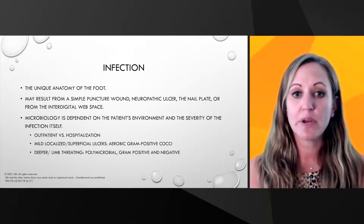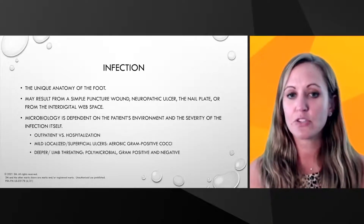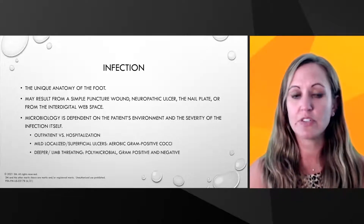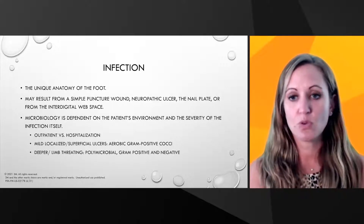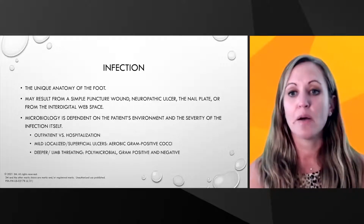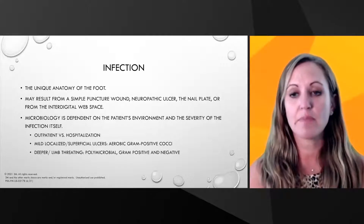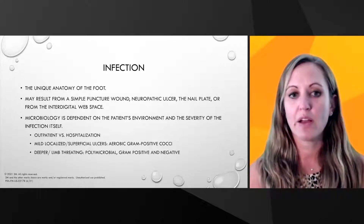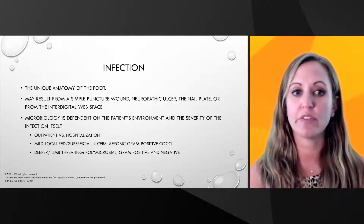When we talk about the diabetic foot ulcer, we need to look at infection. Patients who have diabetic foot ulcers are at higher risk for developing an infection because of the unique anatomy of their foot. An infection may result from a simple puncture wound, from a neuropathic ulcer, from the nail plate, or from the interdigital web space. Because these patients may have microvascular blood flow problems, they are at high risk for a small problem turning into a large problem very fast.